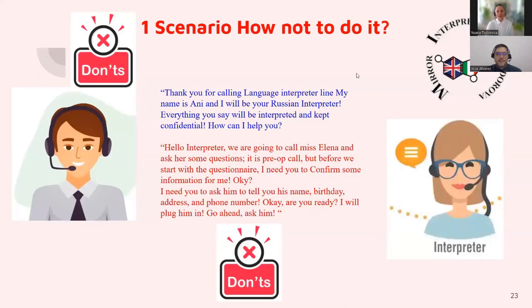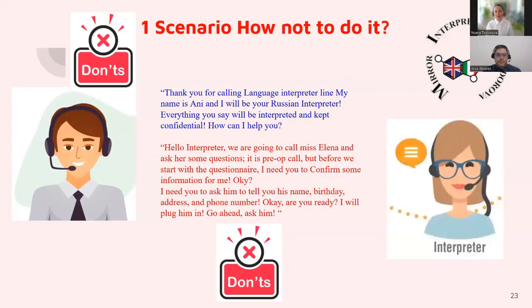In the first scenario, when you see red and the sign that says 'don't do it,' this is an example of how not to do it for everybody who uses an interpreter. Me and Jose will show you how it's not supposed to be done, and then we're going to give you proper coaching on how to do it properly.